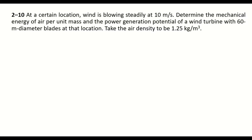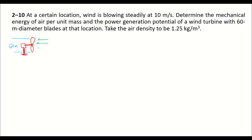The wind is blowing steadily at a certain velocity. The mechanical energy of air per unit mass and the power generation potential are to be determined. Drawing an illustration: the turbine has blades of 60 meters diameter. The velocity V equals 10 meters per second, and the density of air rho equals 1.25 kilogram per cubic meter.